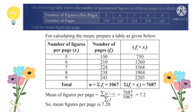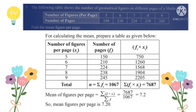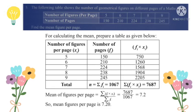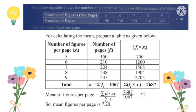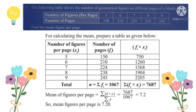So the mean figures per page is 7.20. This completes all the questions in the exercise, question number 1 through question number 6. Thank you for watching the video.